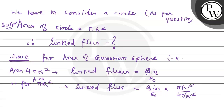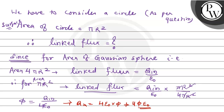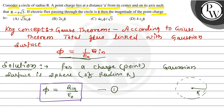r² cancels with r², and π cancels with π. So the flux coming out — flux linked φ — equals Q enclosed upon 4ε₀. From here, we calculate the value of Q enclosed, that is the charge: Q enclosed equals 4ε₀φ. This is our calculated answer. So option number 4, that is option D, is the right option. I hope you understood it well.